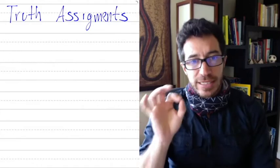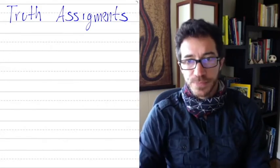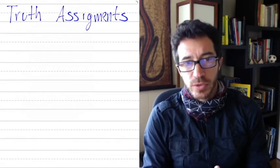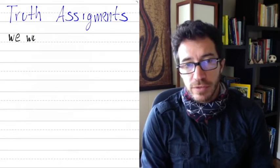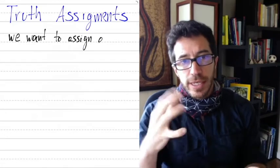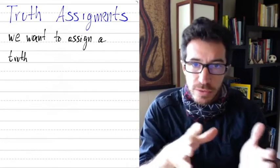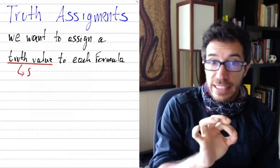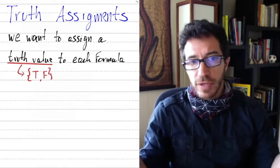Now we're going to see how to assign truth values to these formulas. The first thing we need to do to assign a truth value to a formula is assign truth values to the variables. We want to assign to each formula a truth value — a value that could be either true or false. These truth values could be either T or F; that's what we're going to use for true or false.